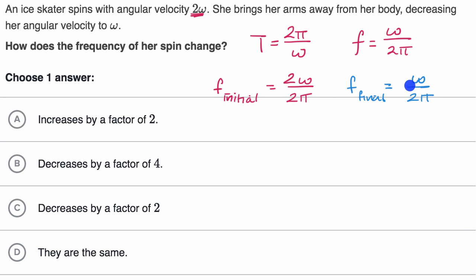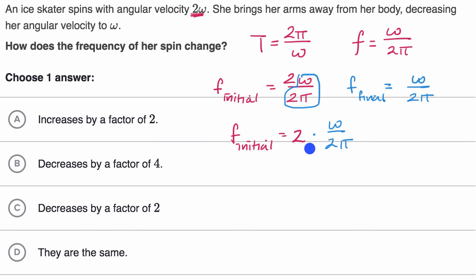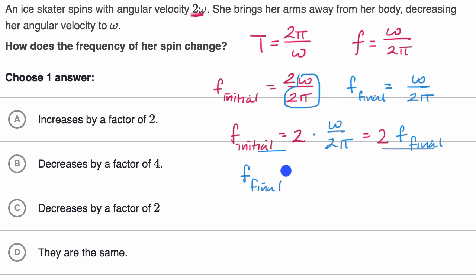So how do these compare? I can rewrite the initial frequency as two times omega over two pi, which is two times the final frequency. So frequency initial equals two times frequency final. Or equivalently, dividing both sides by two, frequency final equals one half of frequency initial. If your initial frequency is twice your final, then your final is one half your initial.